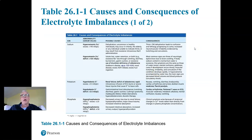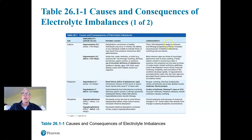Here's a table highlighting different types of imbalances in electrolyte concentrations and their possible causes and consequences. Focusing on sodium: if we have hypernatremia, that means too much sodium — a highly concentrated sodium level — and the biggest cause of that is probably dehydration. If water escapes from the body leaving salts behind, we're going to have an increase in sodium concentration.